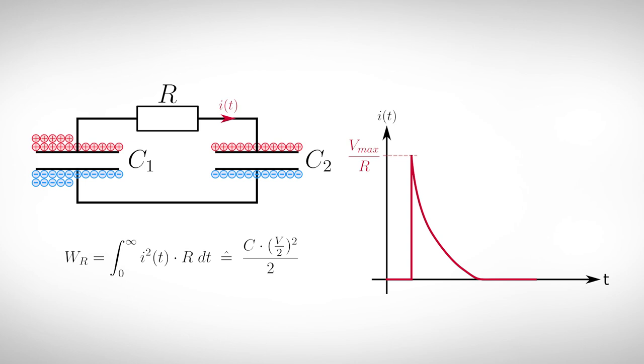During the charging process, a current flows through the resistor and generates power loss, or in other words, heat. This accounts for the missing half of the energy.